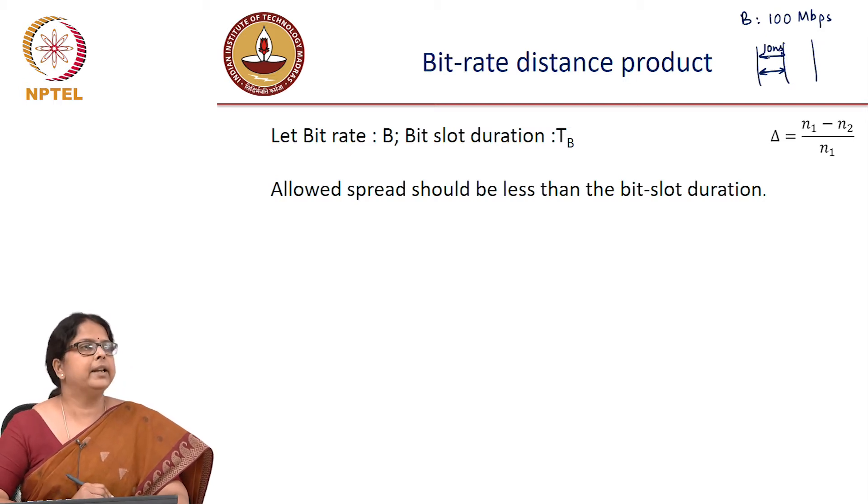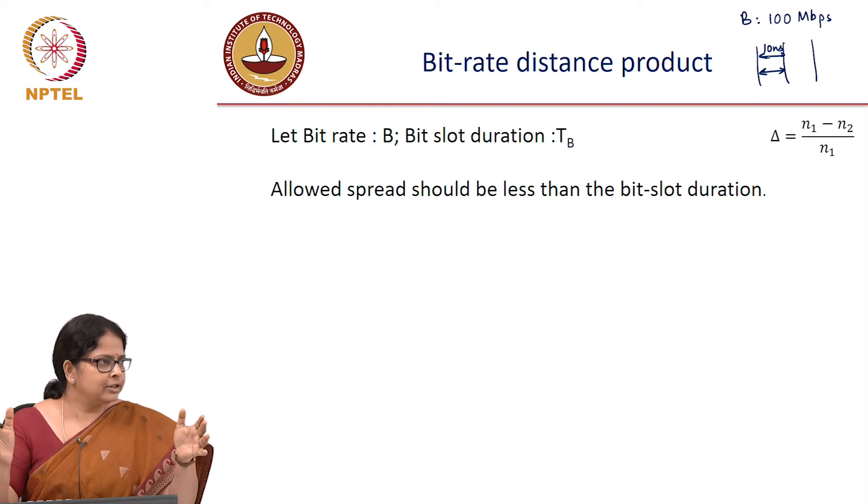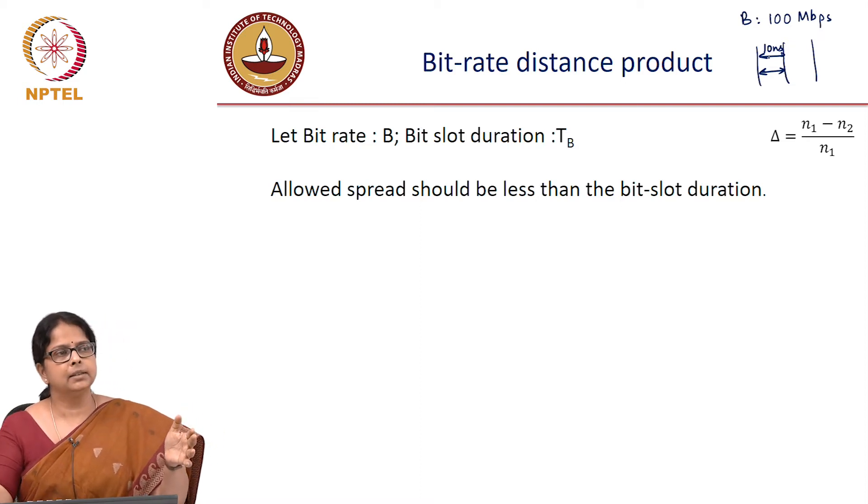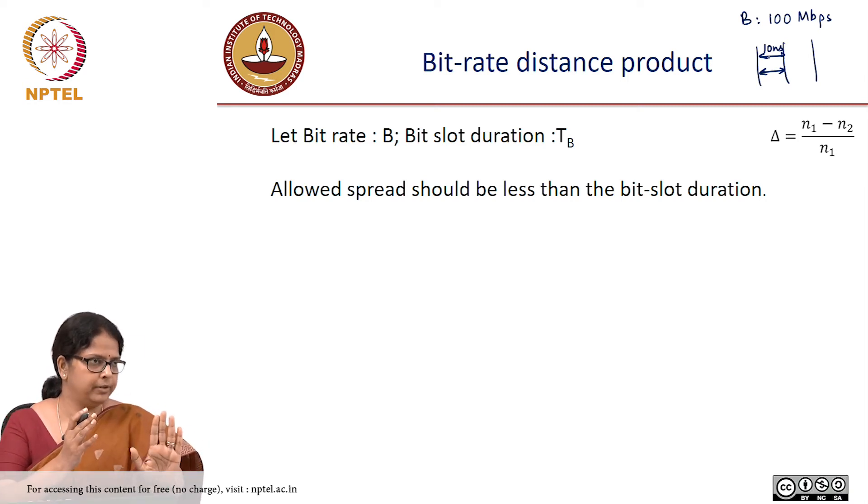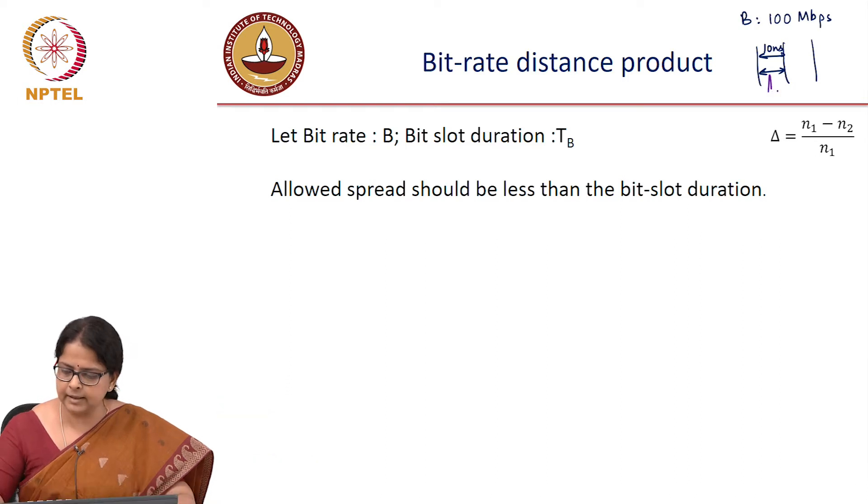In a very simplistic way, we can demand that the spread should not be greater than the slot duration. The delta T, after it propagates through the fiber, the spread. Initially let us say I had my pulse which was looking like, for instance, this.